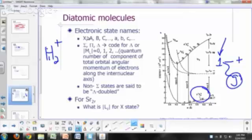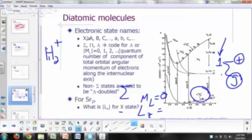G is for gerade, plus is another code for another symmetry property of the wave function. So what's the Z component of the orbital angular momentum of this electronic state? This is the X state. Sigma is code for M sub L equals zero, so LZ would be zero.